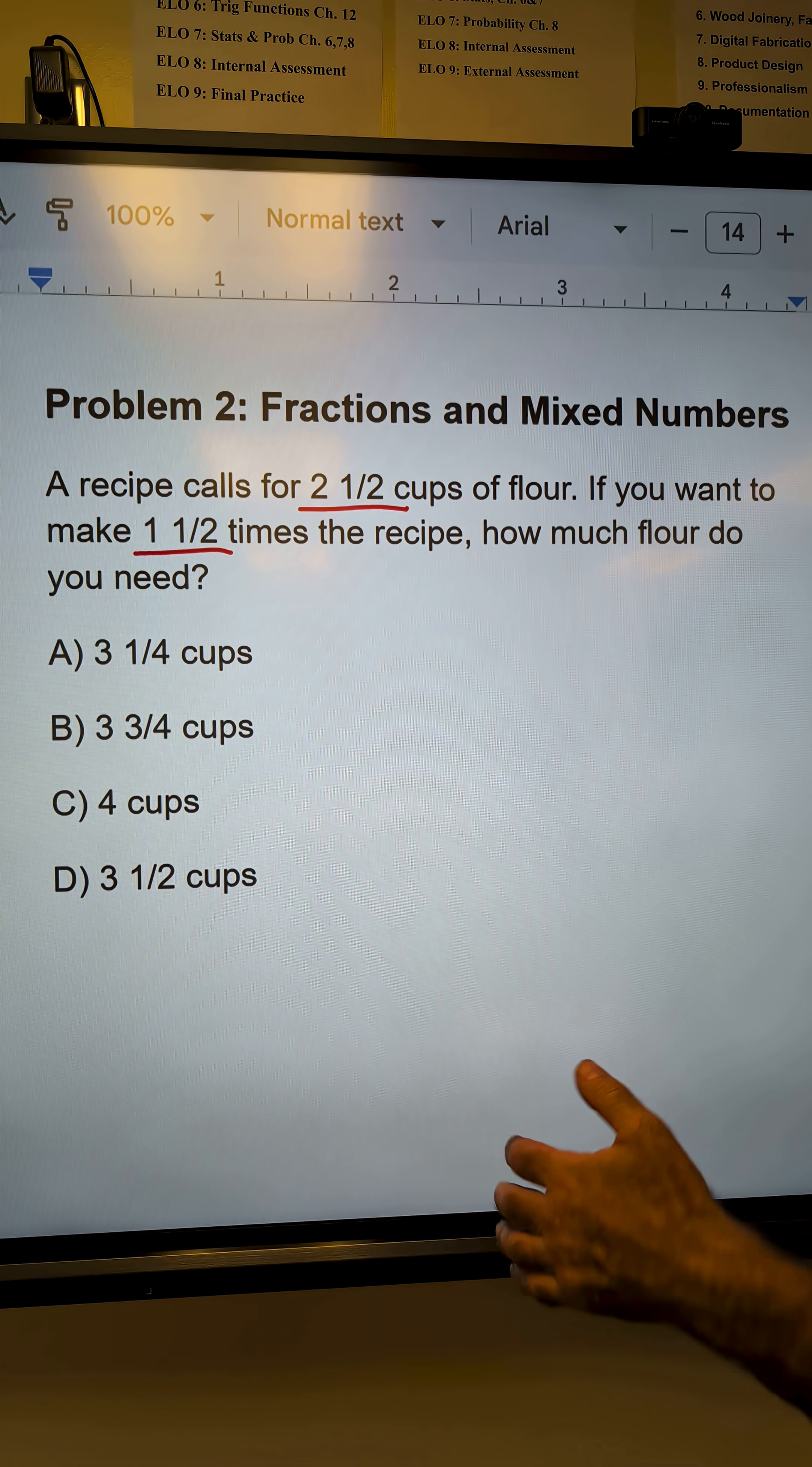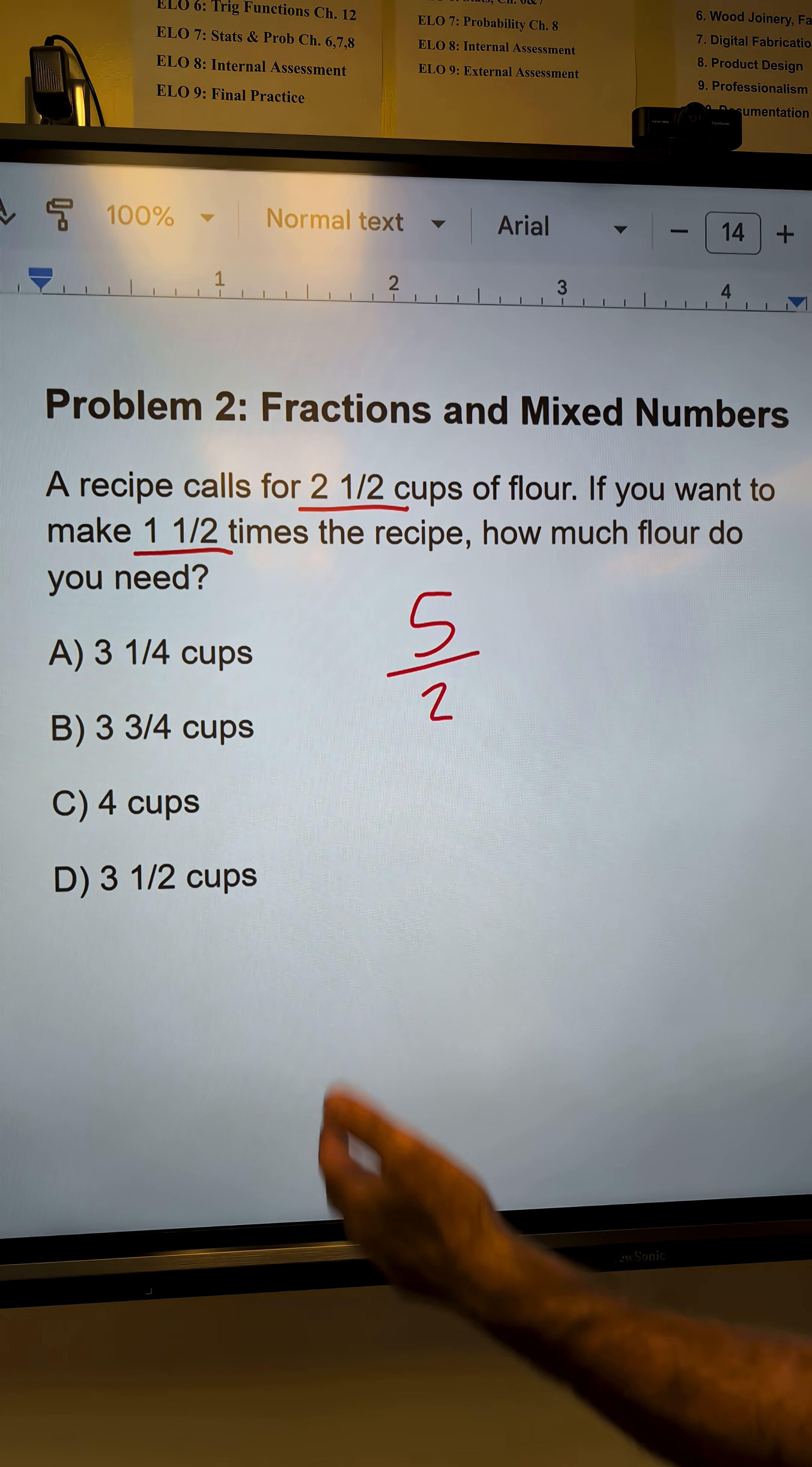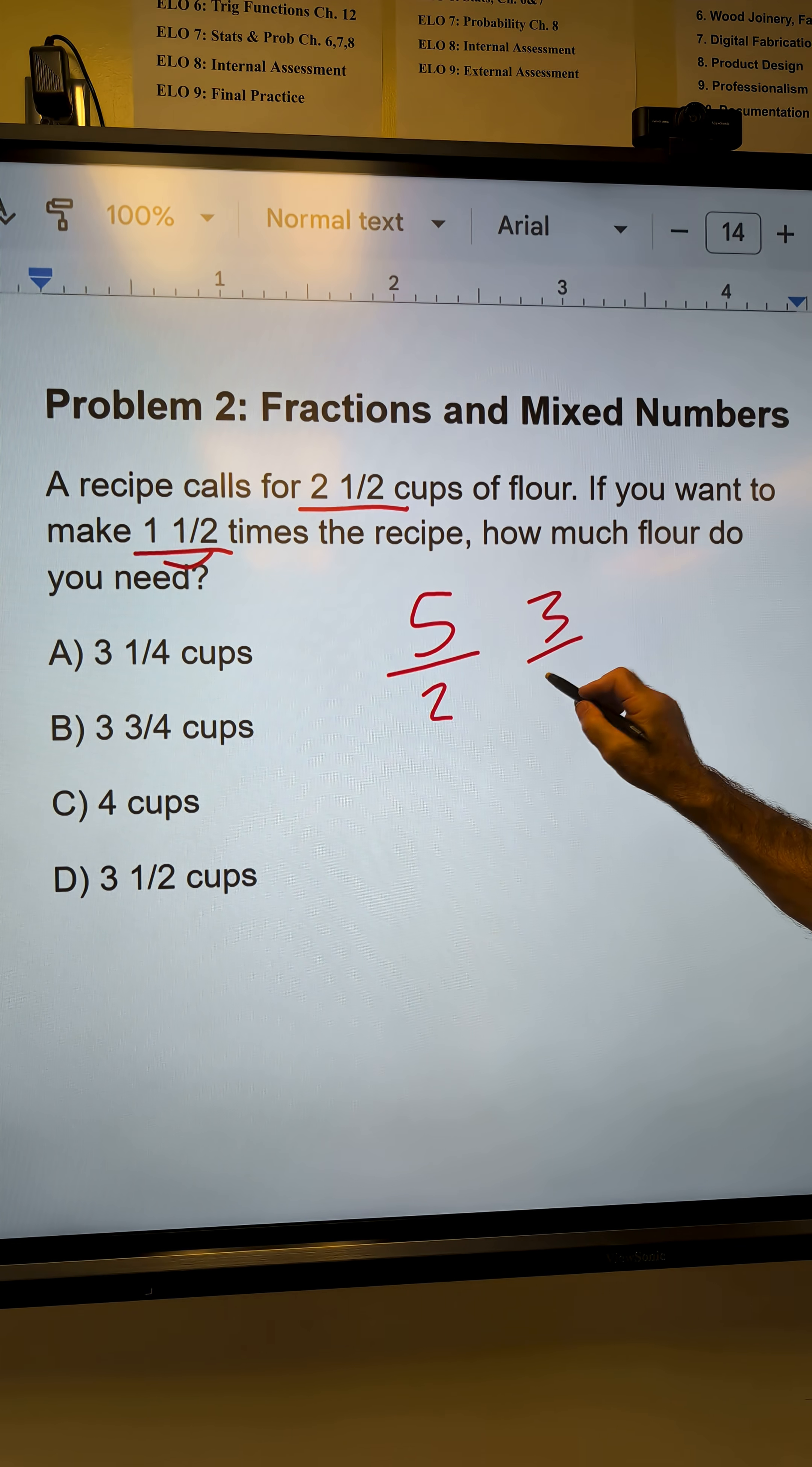A couple different ways to do it. I'm going to turn it into an improper fraction. 2 times 2 is 4, plus 1 is 5. So 2 1/2 is the same thing as 5 halves. 1 1/2, 1 times 2, plus 1 is 3 halves.